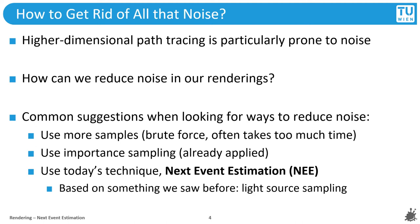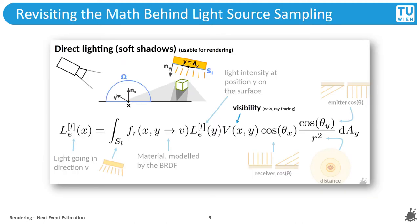The simplest method that always applies is to just use more samples. But if we don't have infinite compute power, we might want to look for other ways to improve quality. We are already importance sampling the BRDFs and that is a good start, but we also saw previously that hemisphere sampling is often not the best idea. We have been looking at light source sampling before — what if we can bring it back, but recursively? Let's quickly revisit the concept of light source sampling.